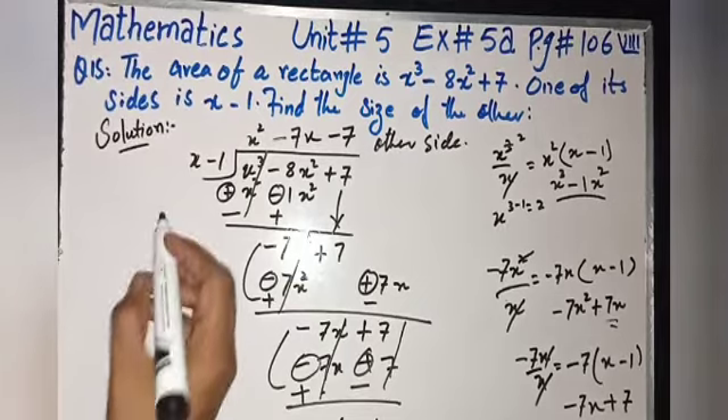Minus plus minus cancel, plus minus minus cancel. No remainder is left. One of its sides is x - 1, the other side is x² - 7x - 7.